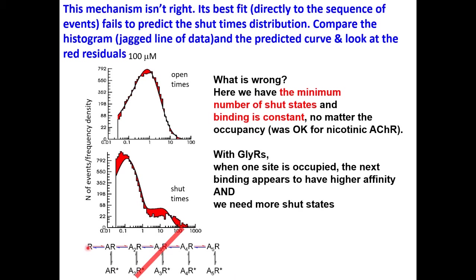What is wrong here? The mechanism tried has five binding sites and five open states, but it forces all the bindings to be the same — it doesn't matter whether the receptor is empty or already has glycines bound, the binding is the same. This doesn't work. The minimum number of shut states with constant binding doesn't work for the glycine receptor. It was okay for the nicotinic receptor, but with glycine receptors when one site is occupied the next binding appears to have higher affinity, and we need more shut states.